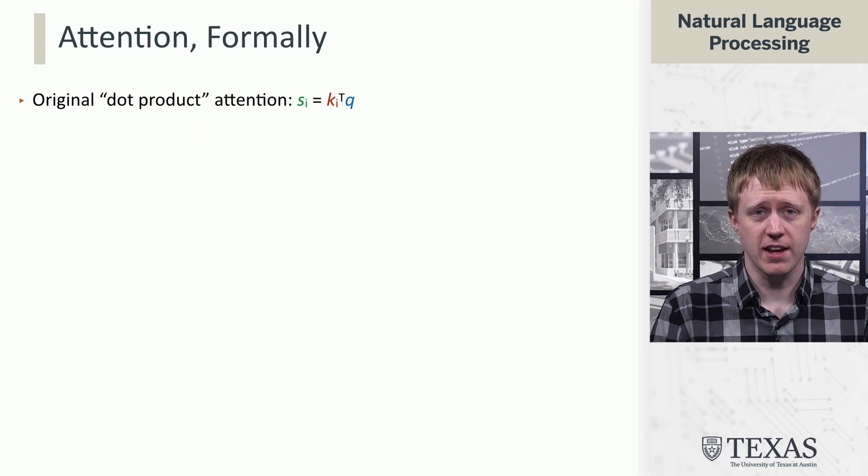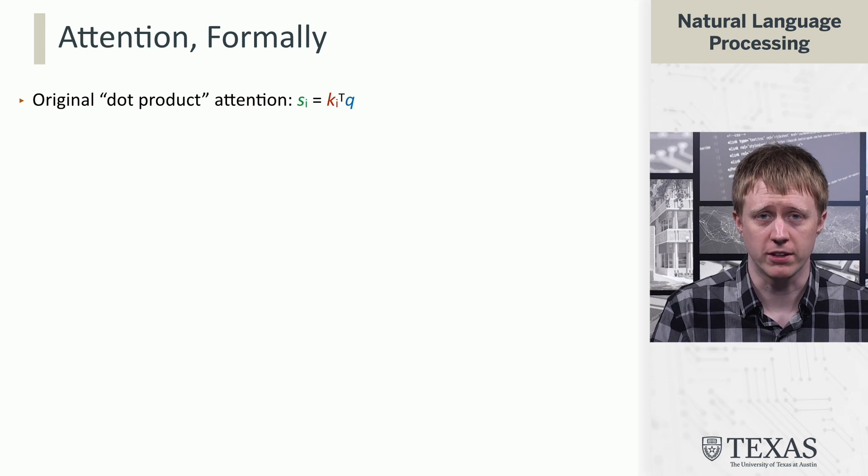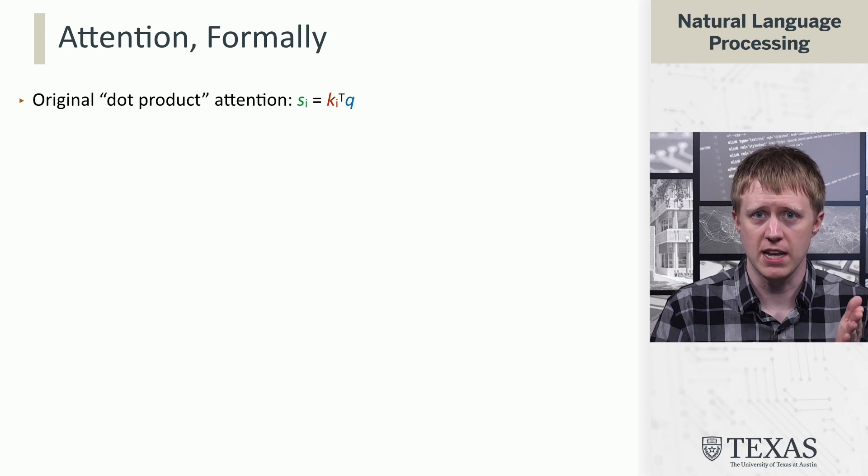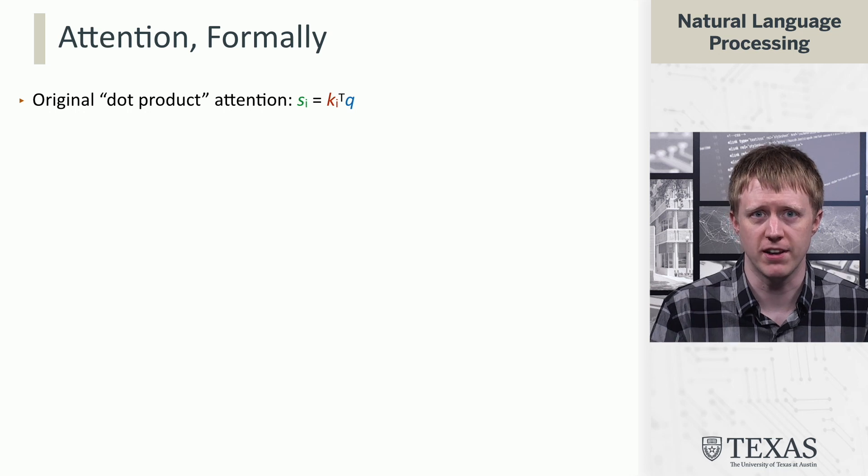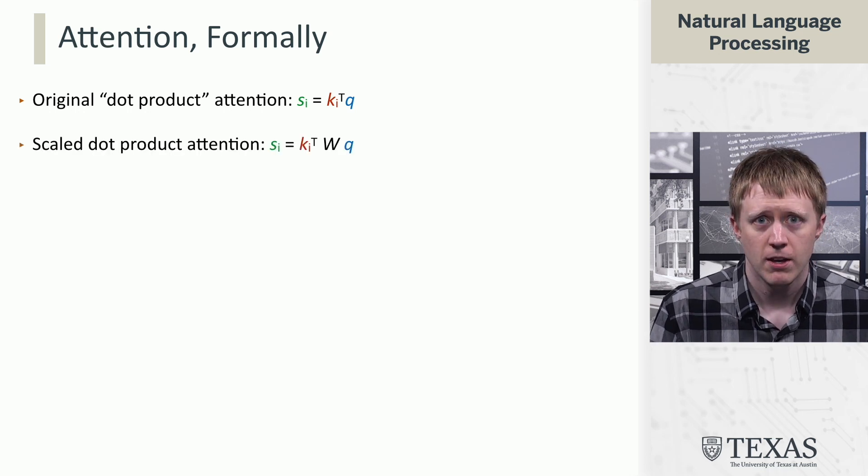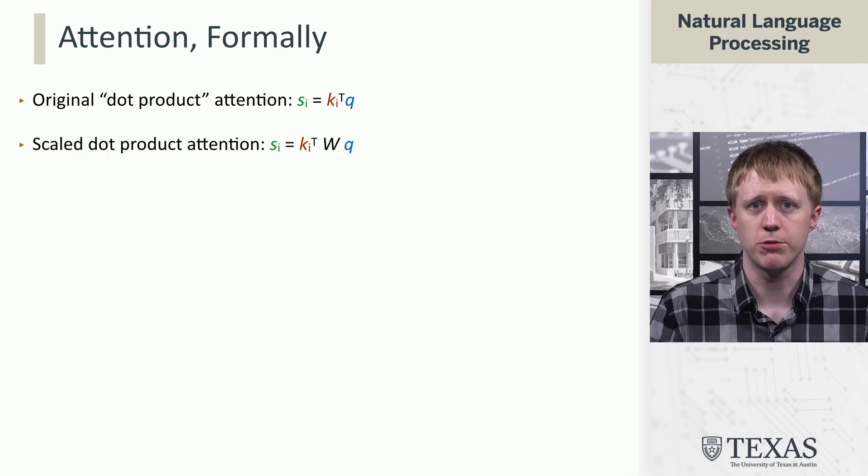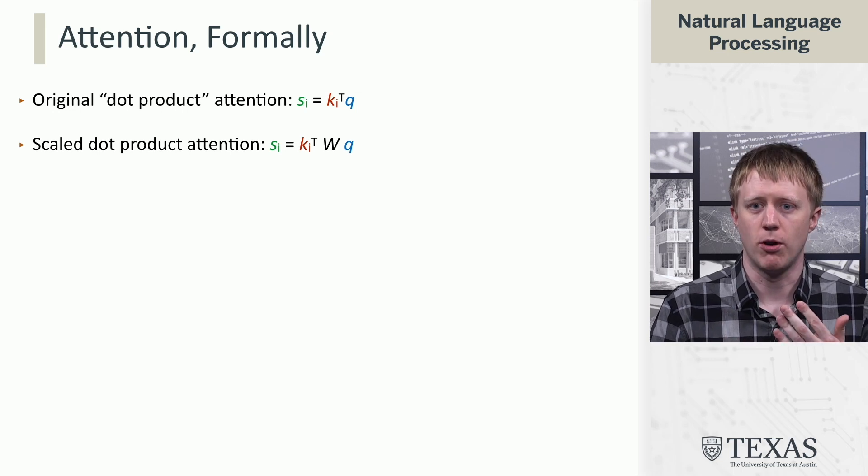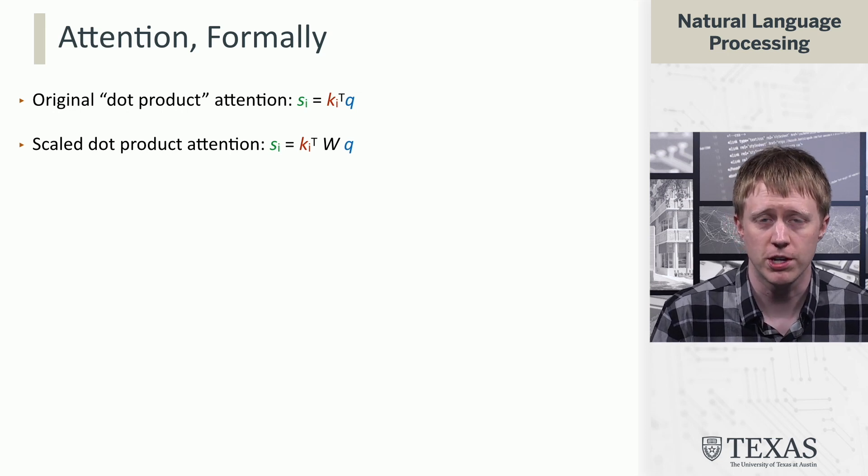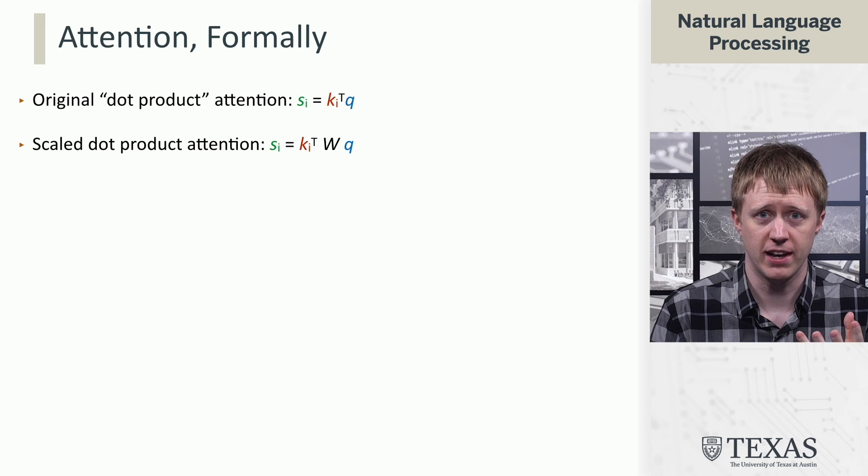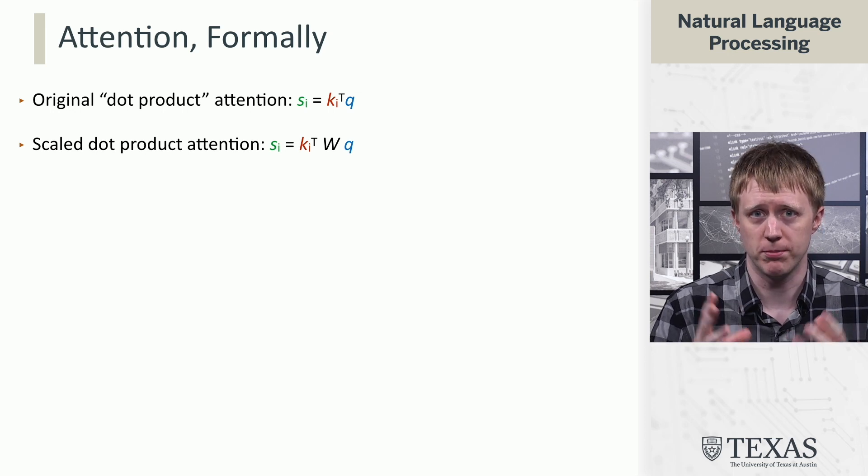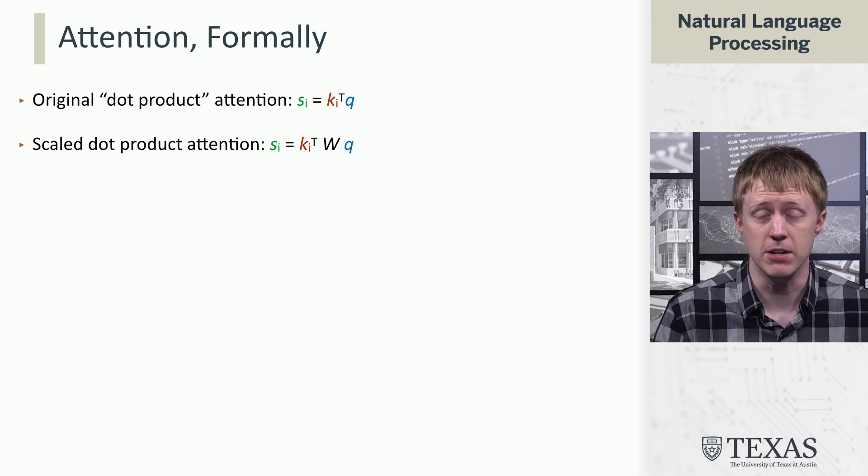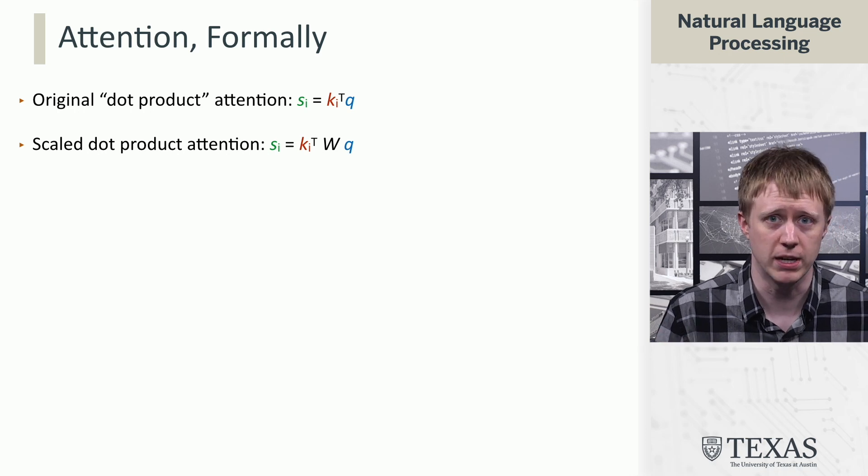So, this uses a formulation of attention called dot product attention, where the interaction between the keys and the query is mediated by the dot product operation. In reality, what we're using here, once we start introducing these matrices, is a form called scaled dot product attention, where you have a matrix that basically forms this bilinear function that computes an inner product between K and Q.